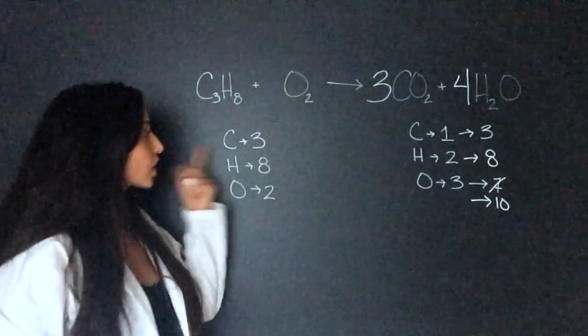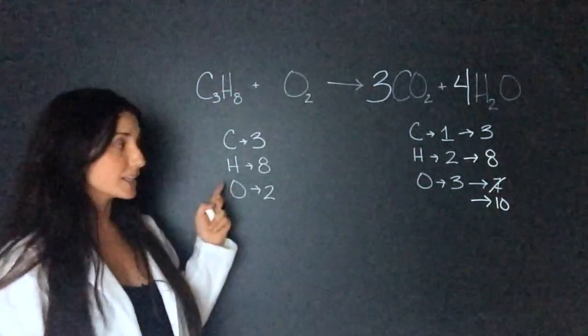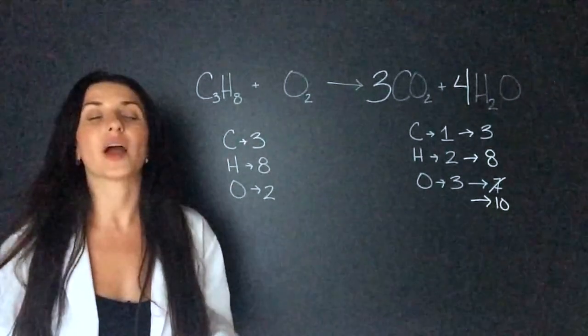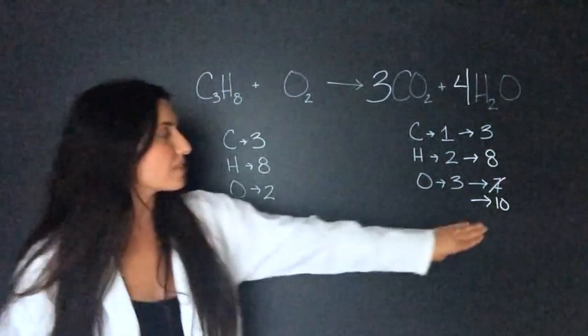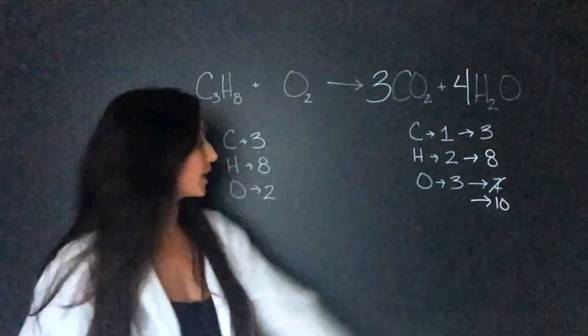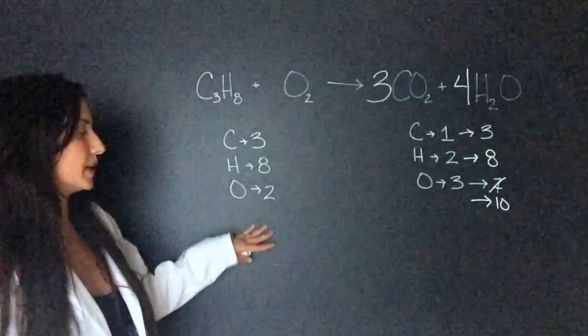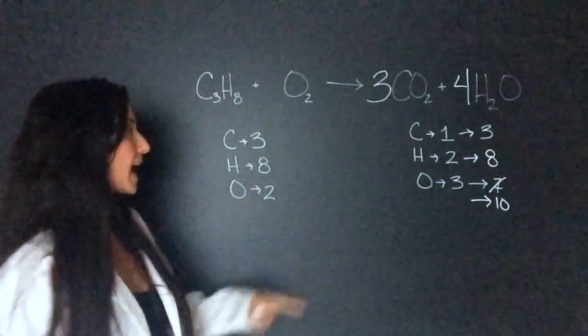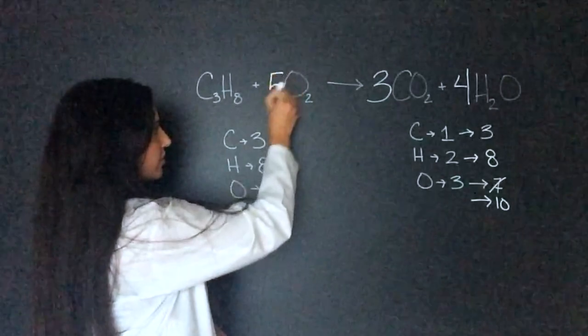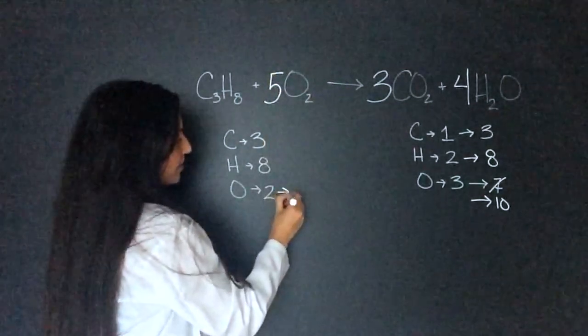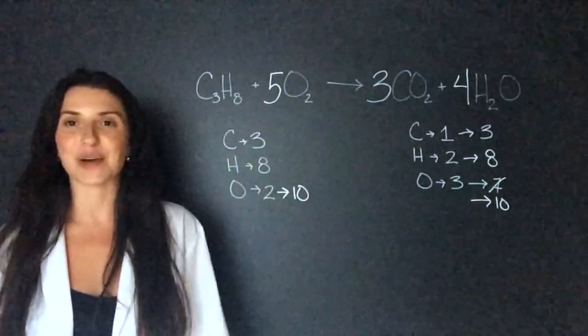So now we have the carbon lining up, hydrogen lines up, and now oxygen is left. We have ten oxygen in the products and we only have two here. So to get two to ten, we'll multiply it by five and now we have ten and everything lines up.